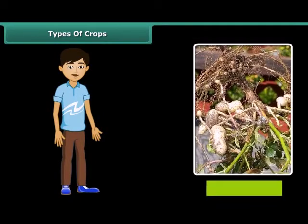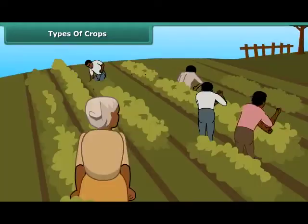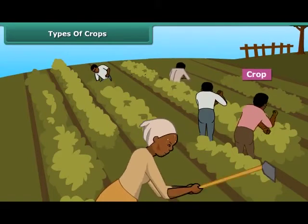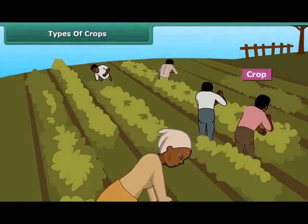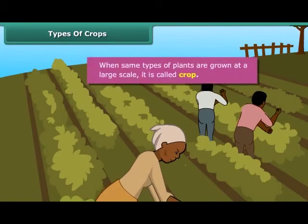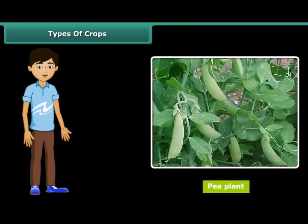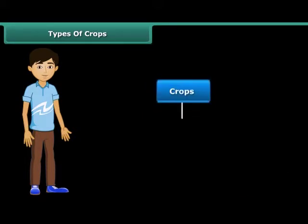Friends, have you ever looked at a groundnut plant? Can we call it a crop? No, we cannot. When the same types of plants are grown at a large scale, then it is called a crop. If you wish to grow a pea plant in the hot season, you cannot do it. In India, crops are broadly classified into two categories on the basis of the season they are grown in.